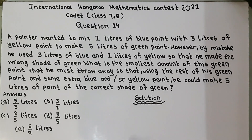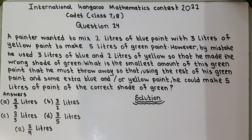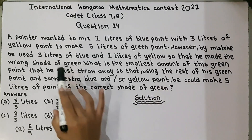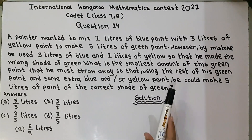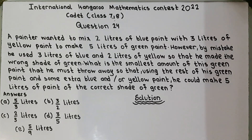They are saying that a painter wanted to mix 2 litres of blue paint and 3 litres of yellow paint to make 5 litres of green paint of the right shade. But by mistake the painter used 3 litres of blue paint instead of 2 litres, and 2 litres of yellow paint instead of 3, so he made the wrong shade of green. They are asking what is the smallest amount of green that he must throw away so that by adding extra blue or yellow paint he could make 5 litres of green paint.